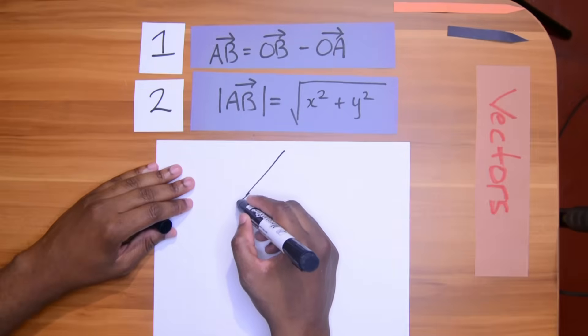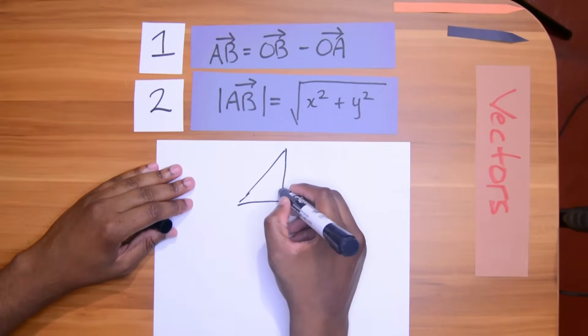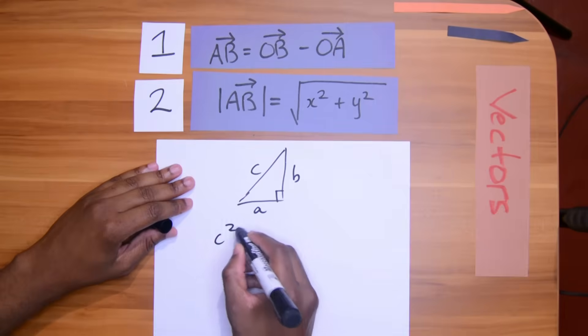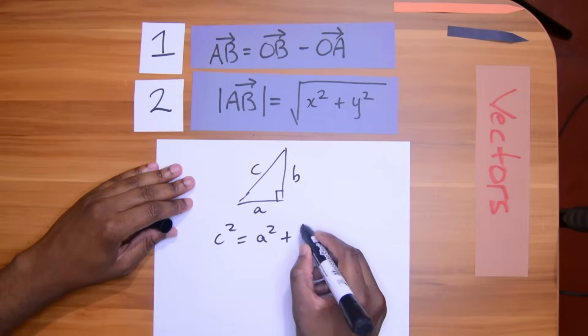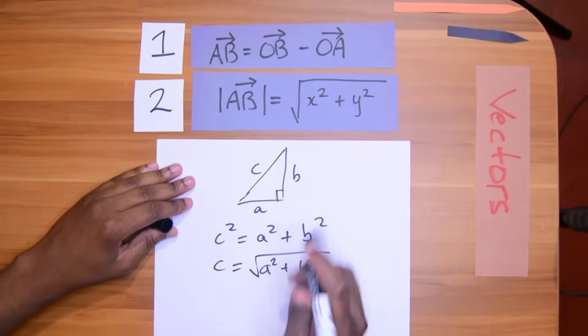Just one quick insight on this rule that you should know to help you remember. It's taken from Pythagoras theorem. So remember if we have a right angle triangle and we have C, A and B. Pythagoras theorem says C squared is equal to A squared plus B squared. So C would be equal to the square root of A squared plus B squared, which is basically what we are seeing here.